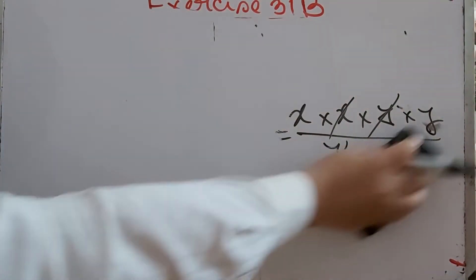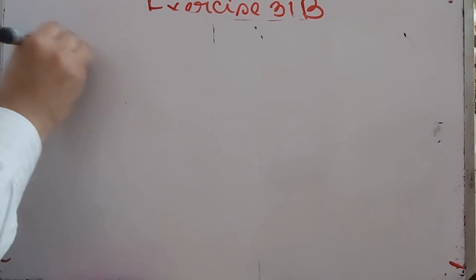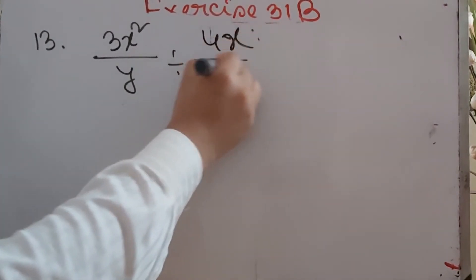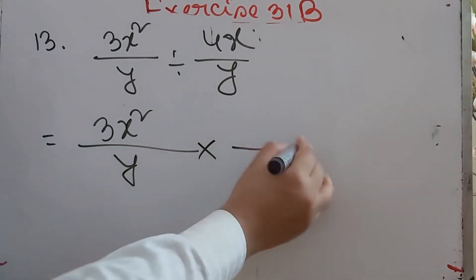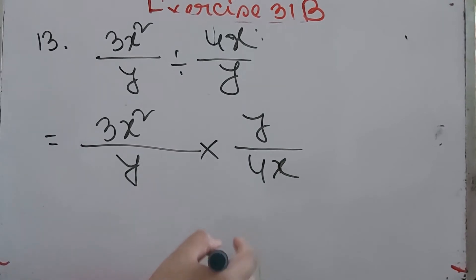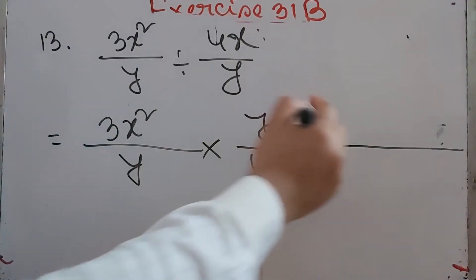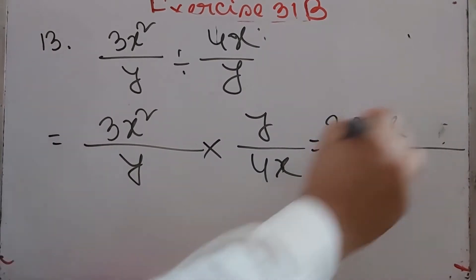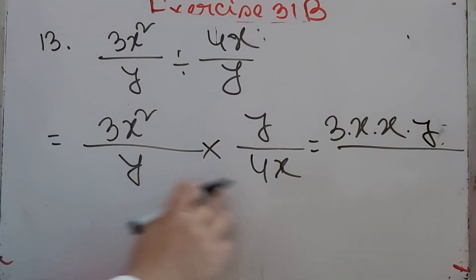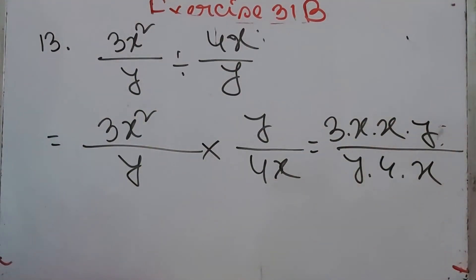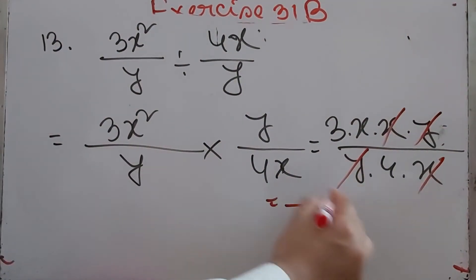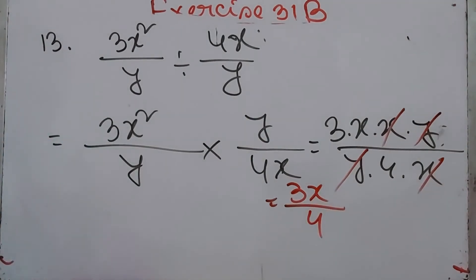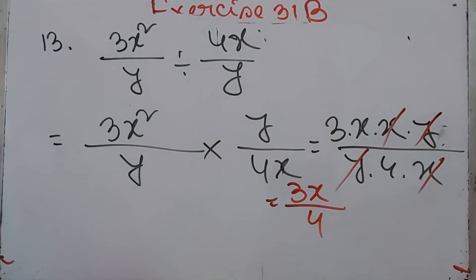Number 13: 3x²/y divided by 4x/y. Multiply 3x²/y by y/4x. Expanding the numerator: 3×x×x×y, and denominator: y×4×x. Cancel y by y and one x by x, leaving 3x/4 as the answer.